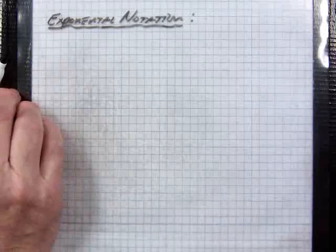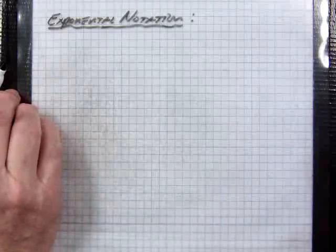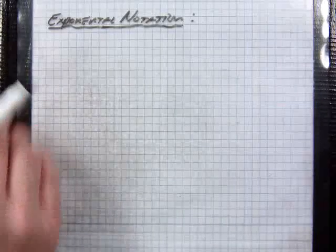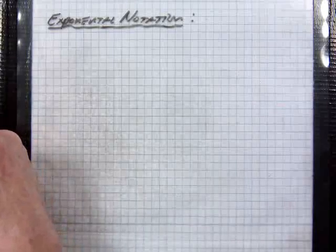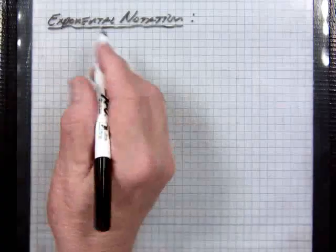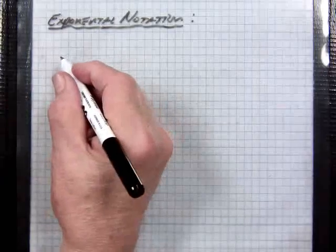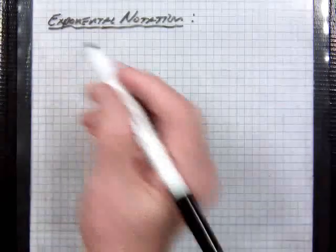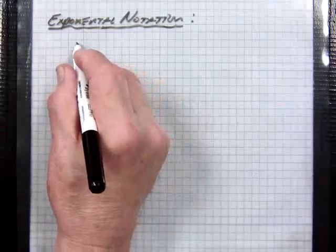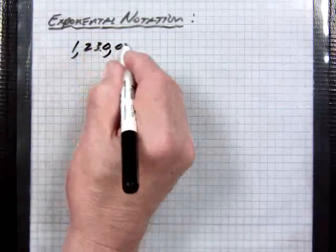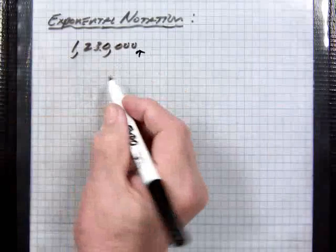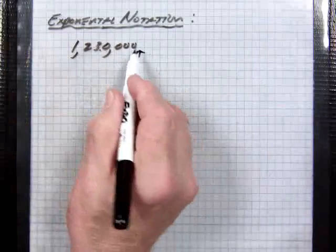Exponential notation refers to the power value or powers of 10 in terms of converting a number to a power of 10. So, just making up a number, 1,203,000, something of this nature, we assume the decimal place to be right here.